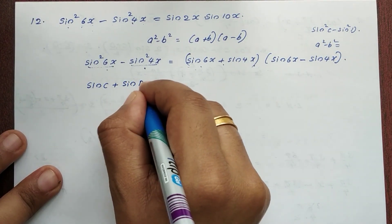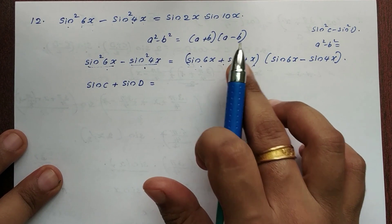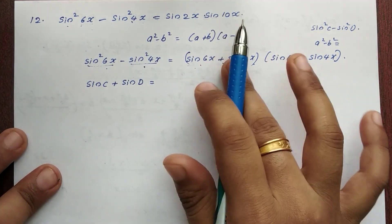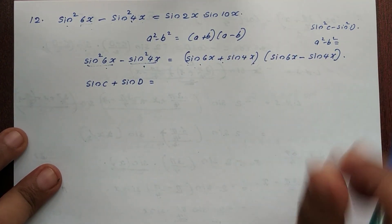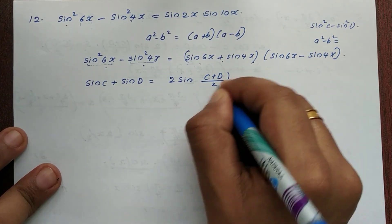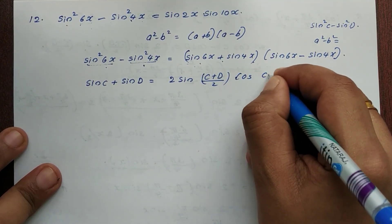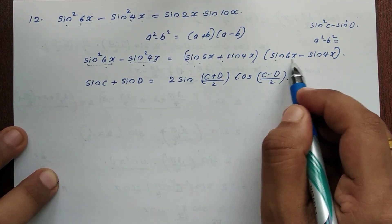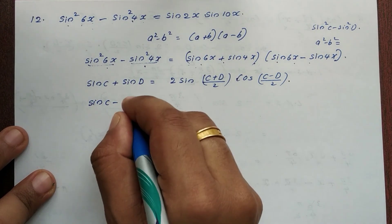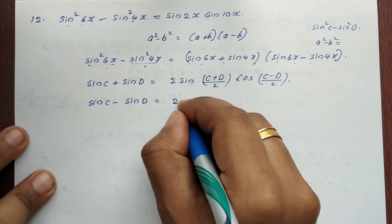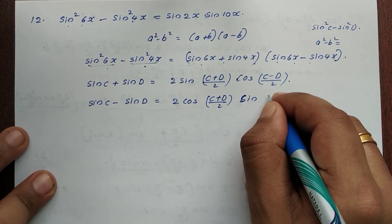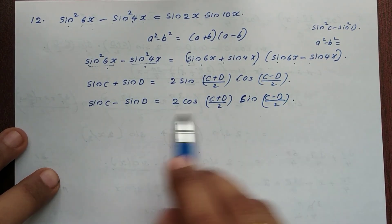Applying the sum-to-product formulas: sin c + sin d = 2 · sin((c+d)/2) · cos((c-d)/2), and sin c - sin d = 2 · cos((c+d)/2) · sin((c-d)/2). So here we will apply 2 · sin((c+d)/2) · cos((c-d)/2) for the first factor, and the sin c minus sin d formula for the second.